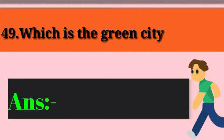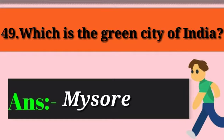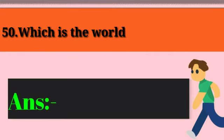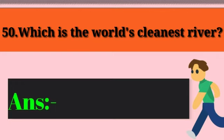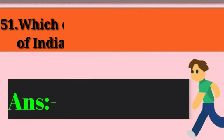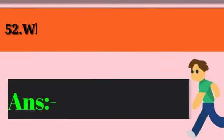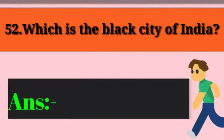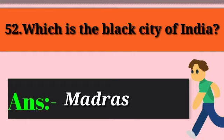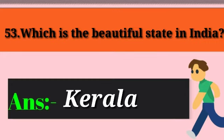Question 49: Which is the green city of India? Answer: Mysore. Question 50: Which is the world's cleanest river? Answer: River Thames. Question 51: Which city is known as the Blue City of India? Answer: Jodhpur. Question 52: Which is the Black City of India? Answer: Madras, or Chennai. Question 53: Which is the most beautiful state of India? Answer: Kerala.